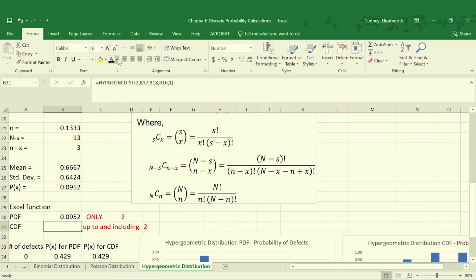Our cumulative will be the same calculation as cell B30, but now we're changing it to cumulative, so it's a 1 at the end. So the probability that up to and including 2 will be defective is 100%.